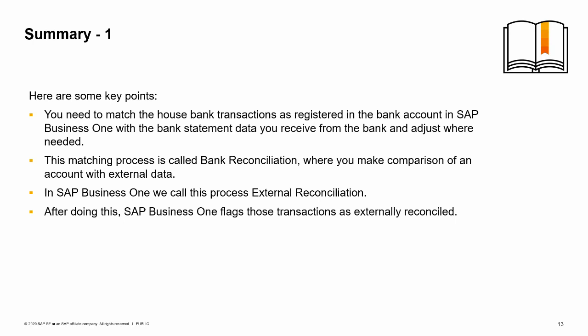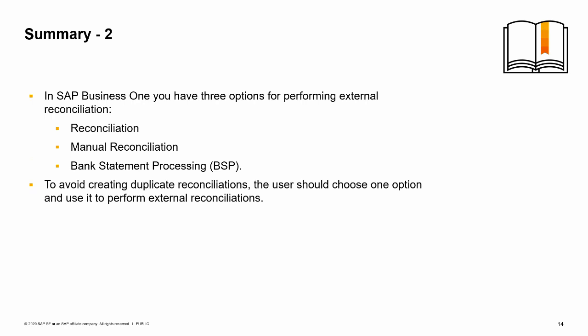Here are some key points. You need to match the house bank transactions registered in the bank account in SAP Business One with the bank statement data you receive from the bank and adjust where needed. This matching process is called bank reconciliation; in SAP Business One we call this external reconciliation. After doing this, SAP Business One flags those transactions as externally reconciled. You have three options for performing external reconciliation: reconciliation, manual reconciliation, and bank statement processing. To avoid creating duplicate reconciliations, the user should choose one option and use it consistently. You have completed the Bank Account Reconciliation Overview topic. Thank you for your time.